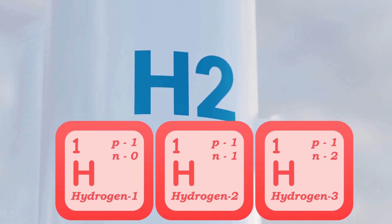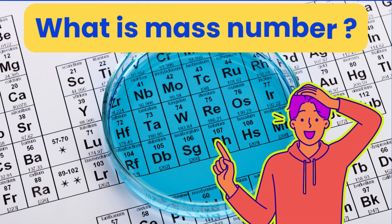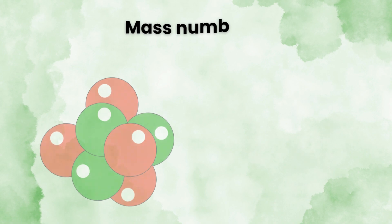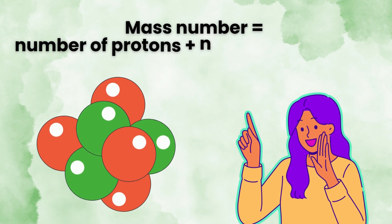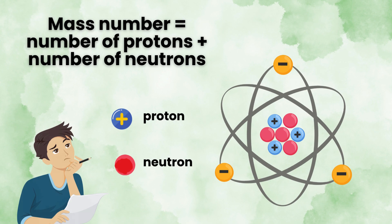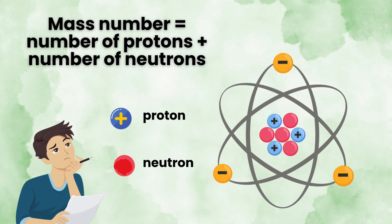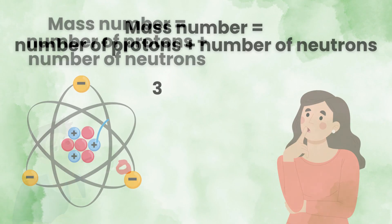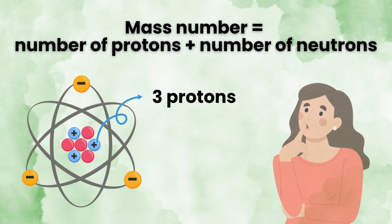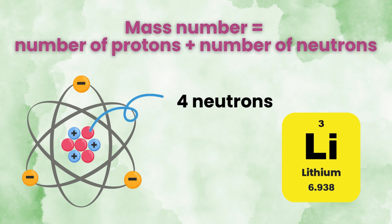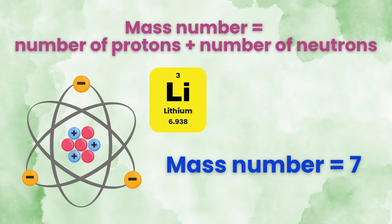Before we jump into isotopes, let us understand what mass number is. The mass number of an atom equals the number of protons plus the number of neutrons in the nucleus of the atom. There are three protons in this atom, so it is lithium. There are four neutrons in the nucleus, so the mass number equals seven.